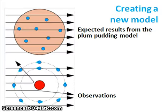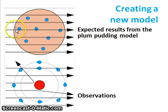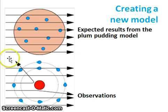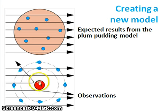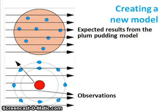This is very interesting because here we can see how a new model is created. On the top we have the plum pudding model and these were the expected results — the alpha particles just passing through the atom. Now the observations on the other side showed that some particles were deflected, so there was something in the center of the atom not allowing the particles to flow through it, indicating a small concentrated charge right there in the center.